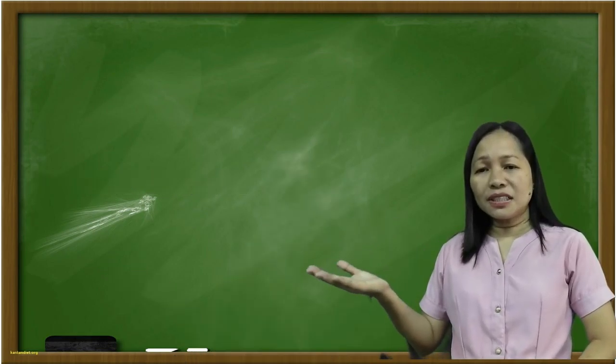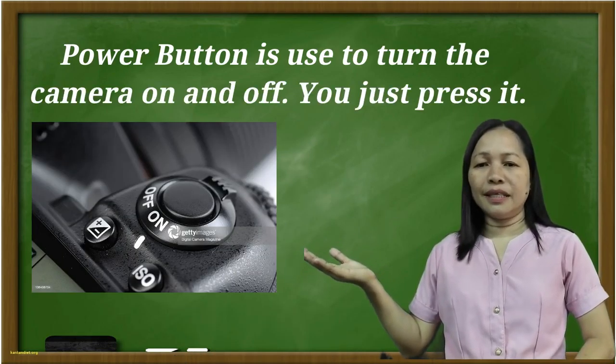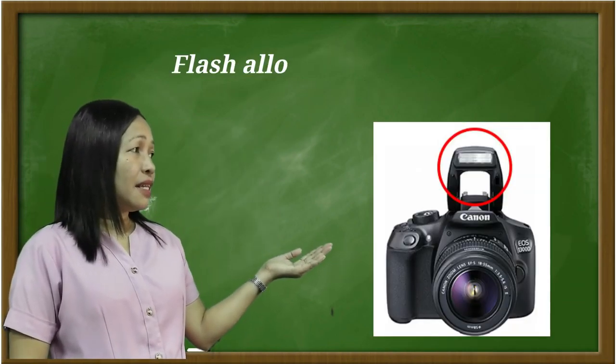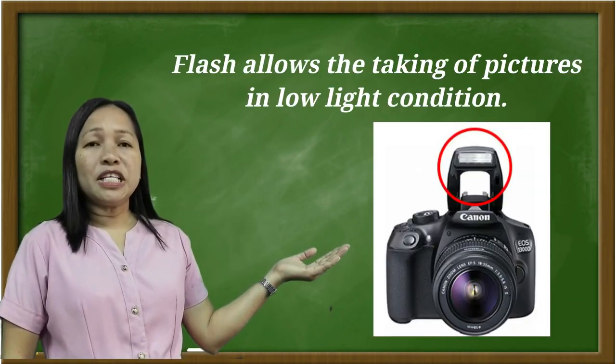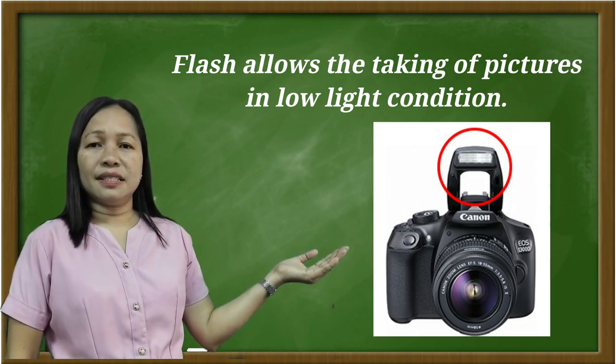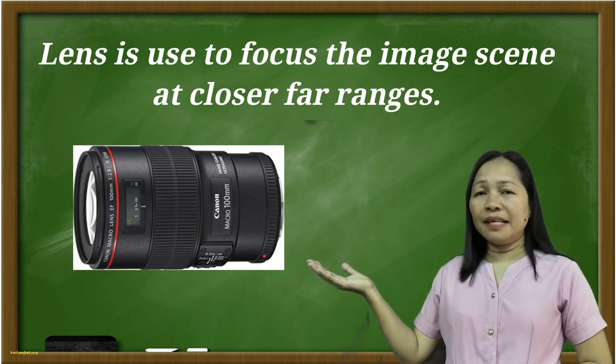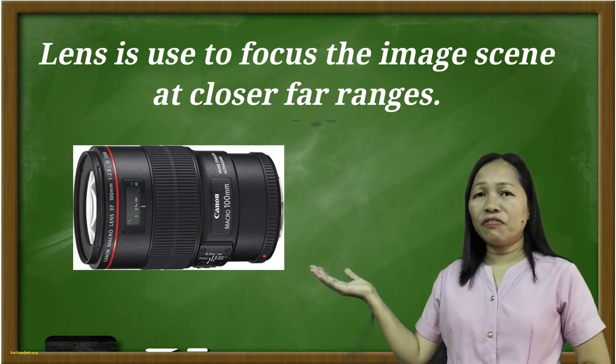Power button is used to turn the camera on and off. You just press it. Flash allows the taking of pictures in low-light conditions. Lens is used to focus the image seen at close or far ranges.